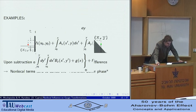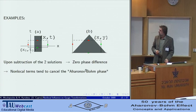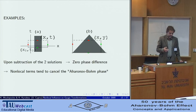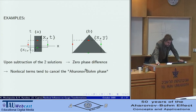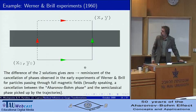And finally, here I will just show you that this previous result can actually give a justification for some observations of Werner and Brille in some old experiments of 1960 where there is a cancellation of the semi-classical phase picked up by trajectories which cancels exactly the Aharonov-Bohm phase. And this exercise gives a rather natural justification, I would say.